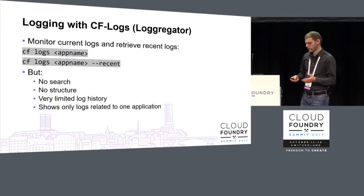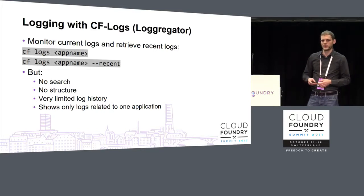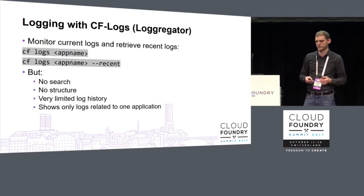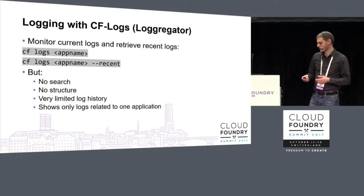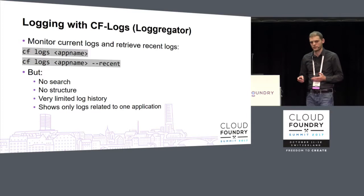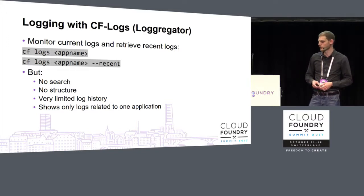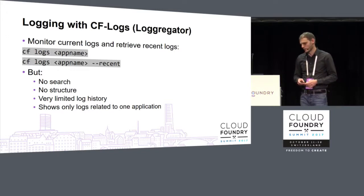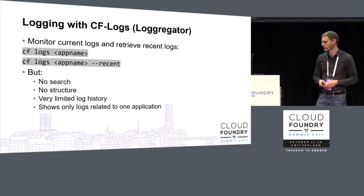What you could do is look into CF logs to check what was going on. CF logs is really nice when you develop an app because it gives you quick feedback. But when you have a live system under heavy load producing many logs, that might not be the best tool, because you're limited in searching your logs, you can't filter them by structure, the log history is limited if you don't pipe them to a file, and it shows only logs related to one application. In a microservice architecture, you might want to look simultaneously into logs originating from various applications.